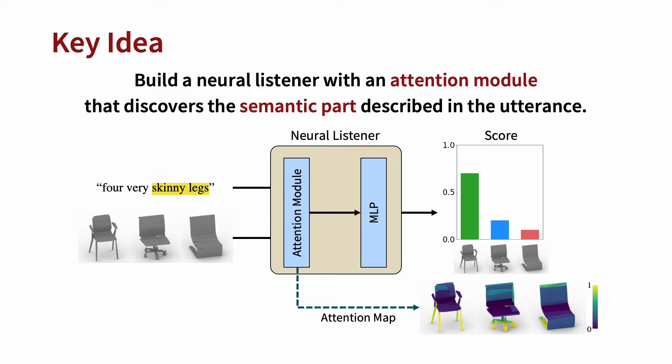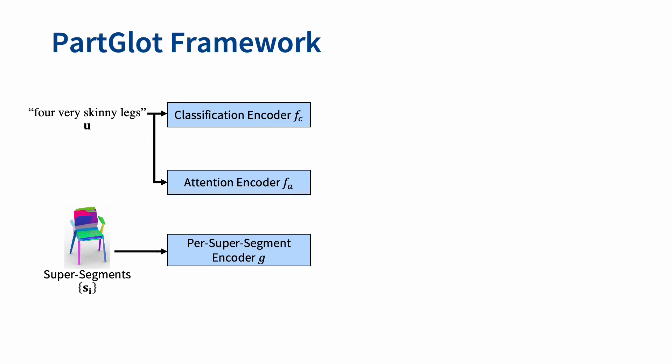Our key idea here is to build a neural listener finding the target shape while creating an attention module that discovers the semantic part described in the input utterance. Here is the PartGlot framework.